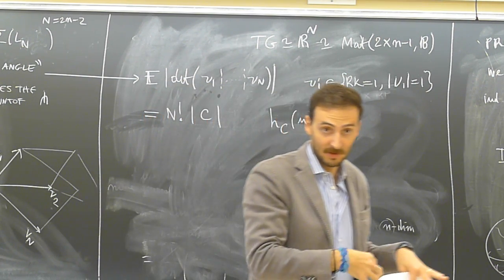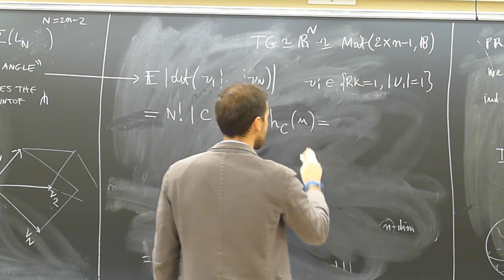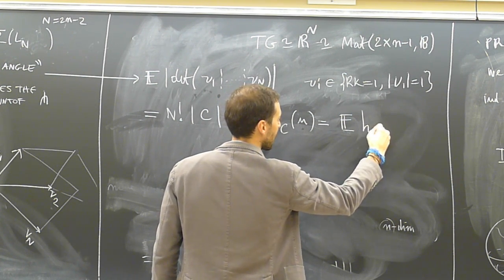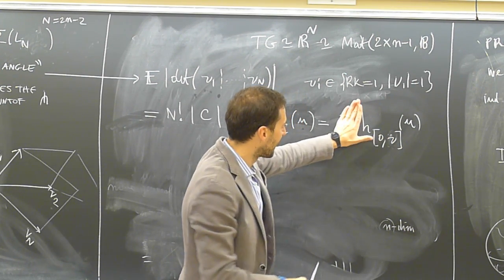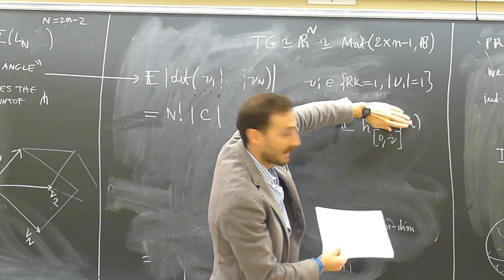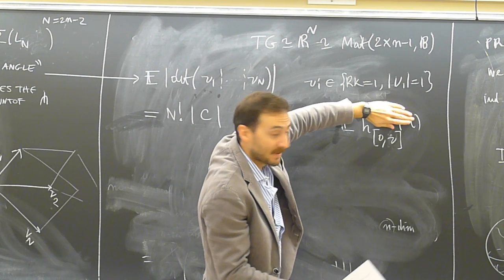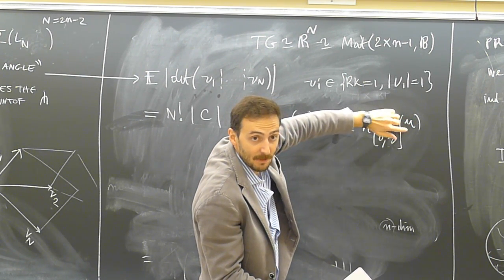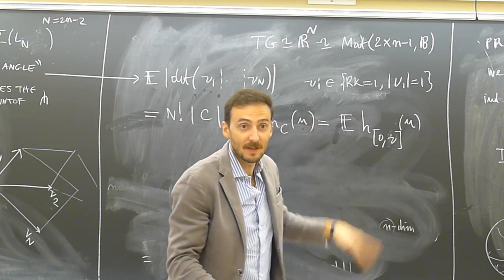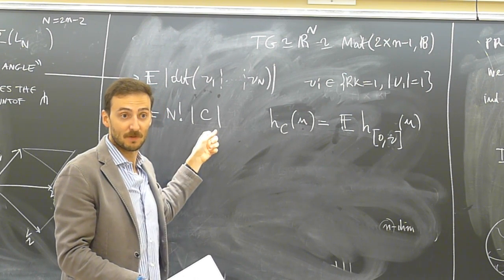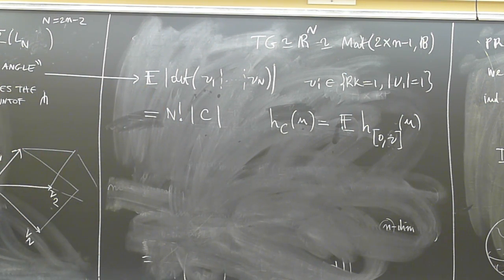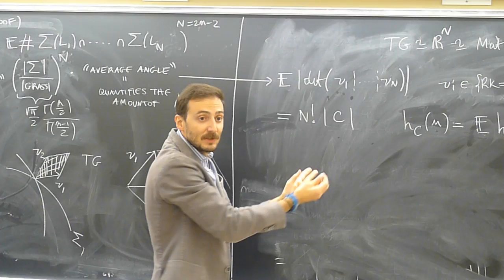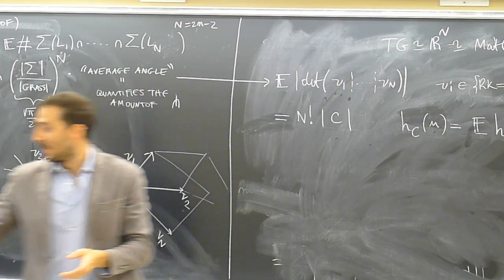This convex body is somehow like the average of these line segments. More precisely, the support function of the convex body — the function that characterizes a convex body — at a point is the expectation of the support function of the line segment from zero to the vector. This is a random convex body; I define the support function at a point and take the average, which gives a function of u — the support function of this new convex body. The volume of this convex body is what we want.